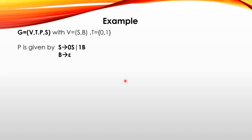Let's take an example. G equals (V, T, P, S) where V equals {S, B} — S and B are the Non-Terminals. The Terminals are {0, 1}. The production rules are: S gives 0S or S gives 1B, S gives 2B, and B gives Epsilon. This is the grammar with its Non-Terminals, Terminals, production rules, and start symbol.